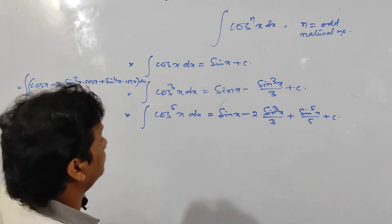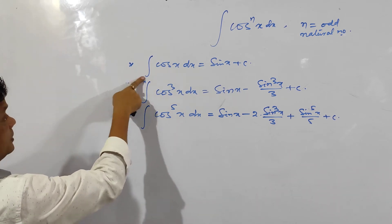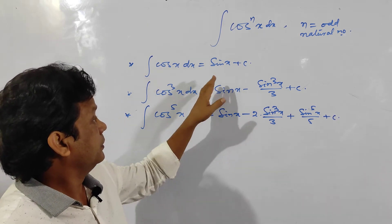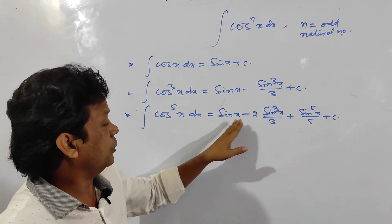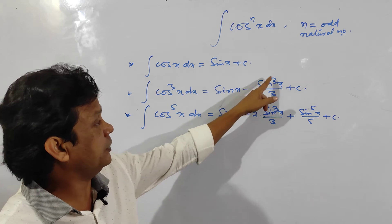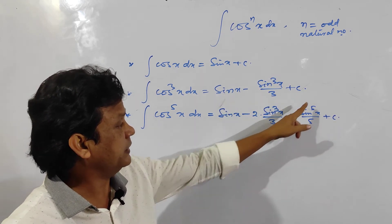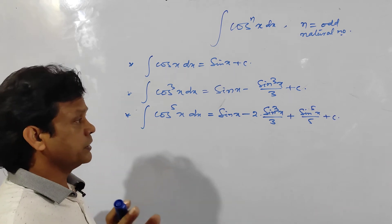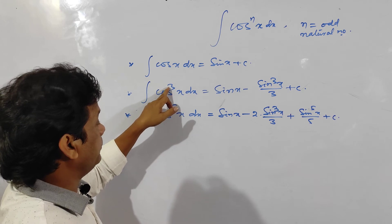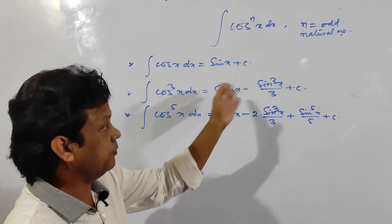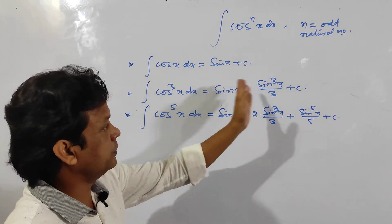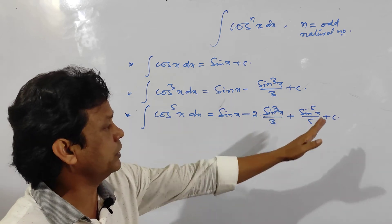We have got the conclusion and the formula is established. Notice that all are odd powers: sin x to the power 1 divided by 1, sin cube x by 3, and sin^5 x by 5 — all odd numbers. The power is 3 so you take terms up to power 3; when the power is 5 you take terms up to power 5 and do not write further terms.